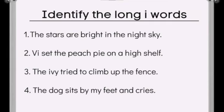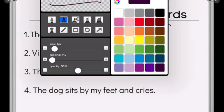I bet you had a lot of good luck finding those long I words. In sentence number one, the stars are bright in the night sky. Did you find all three? We have bright and night with that I-G-H right in there in the middle. And at the end, there's that Y saying I in sky.